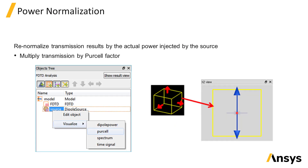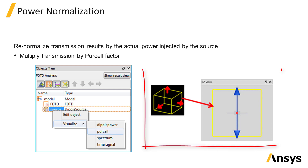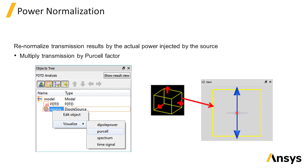Since the actual power emitted by the dipole is modified by surrounding structures, you can renormalize the power transmission results by multiplying the transmission by the Purcell factor. You can get the Purcell factor as a result from the source or measure it using the transmission box analysis group.